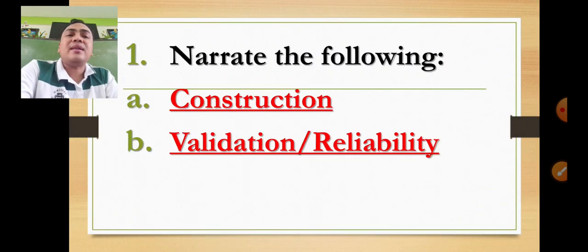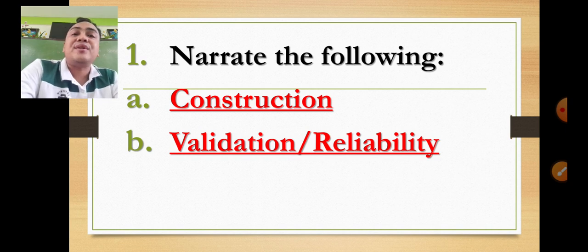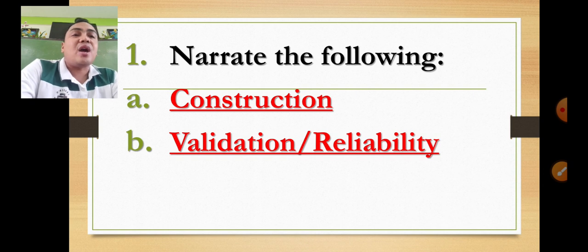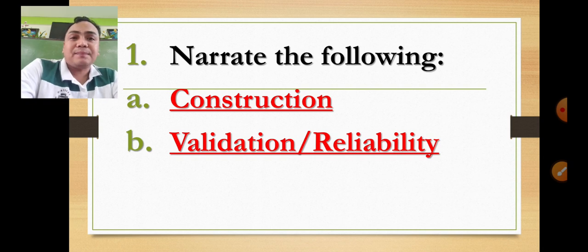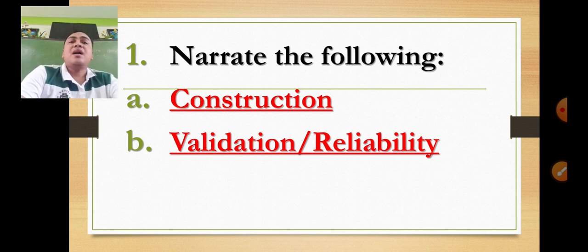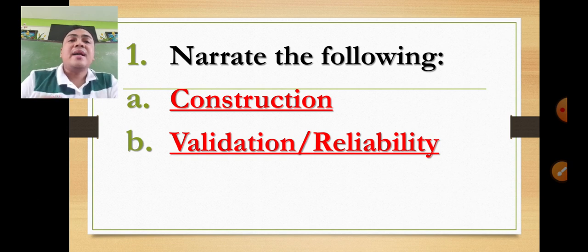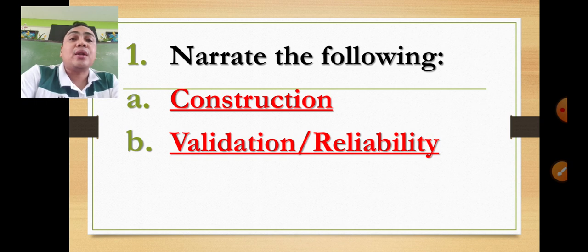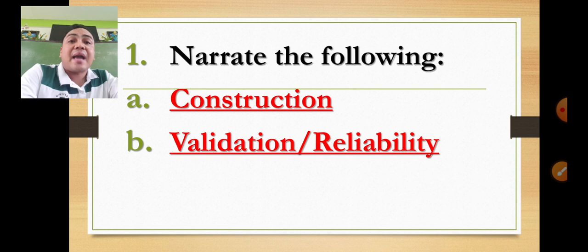Narrate the following: how did you construct your research instruments and what is the format; and how it is validated and how you tested its reliability. Research instruments must be tested for reliability — for instance, internal consistency using Cronbach's Alpha for the Likert scale.